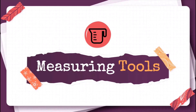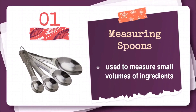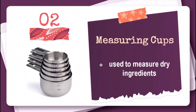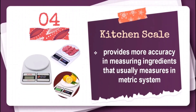Examples of Measuring Tools. Measuring spoons are used to measure small volumes of ingredients. Measuring cups are used to measure dry ingredients. A measuring jar is used to measure liquid ingredients. Kitchen scale provides more accuracy in measuring ingredients, and usually measures in the metric system.